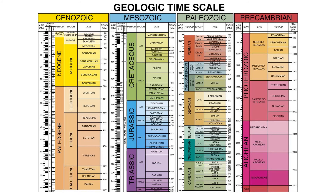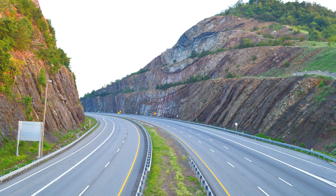Stratigraphic correlation has allowed geologists to develop and formalize a geologic timescale, a system of chronological dating that relates rocks to time. Importantly, this timescale is the means to study the historical rock record and understand Earth history. You'll learn more about it as you continue your learning in historical geology. In the meantime, on your next road trip, take notice of the rocks along the way — you never know what sort of stratigraphic relationships you might just see.